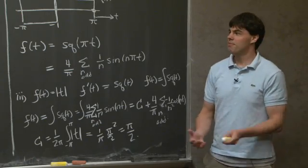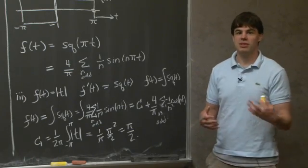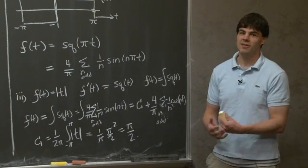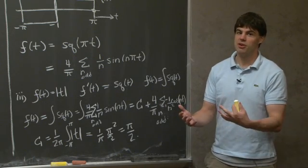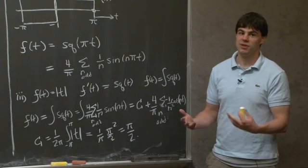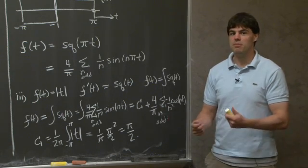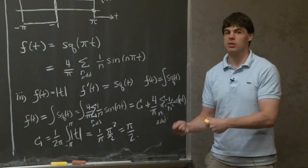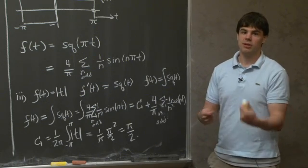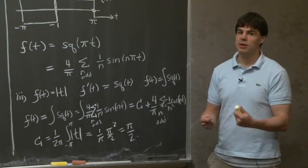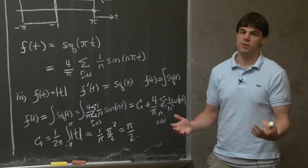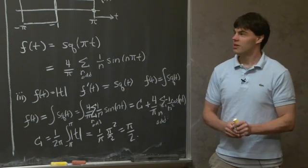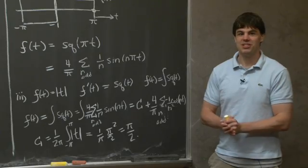So just to quickly recap: in this problem we were given several functions which were related to the square wave function. We started off knowing what the Fourier series for the square wave was, and by manipulating or rewriting these functions in terms of the square wave function, we were able to compute their Fourier series essentially without having to evaluate any integrals. I hope you enjoyed this problem, and I'll see you next time.